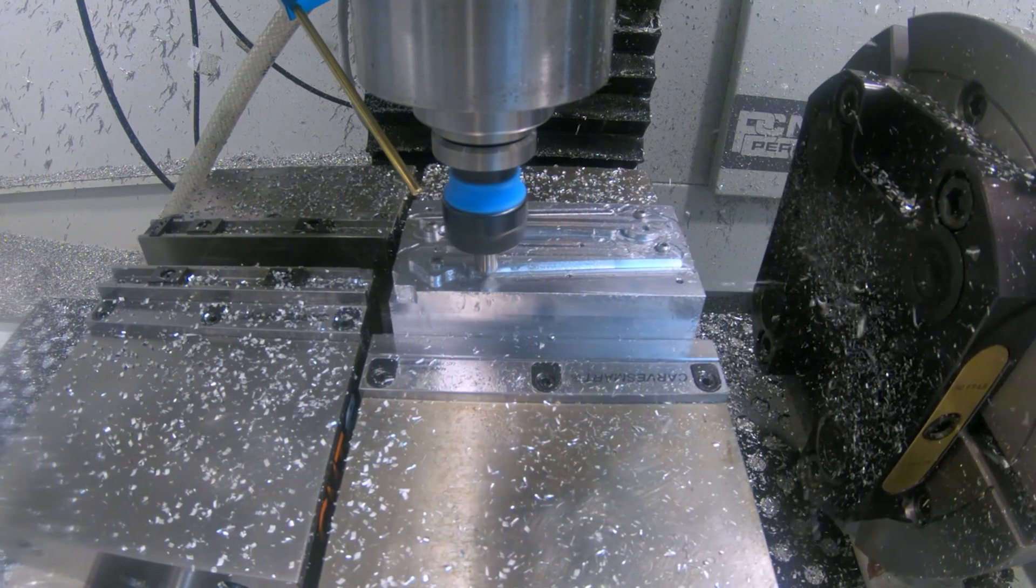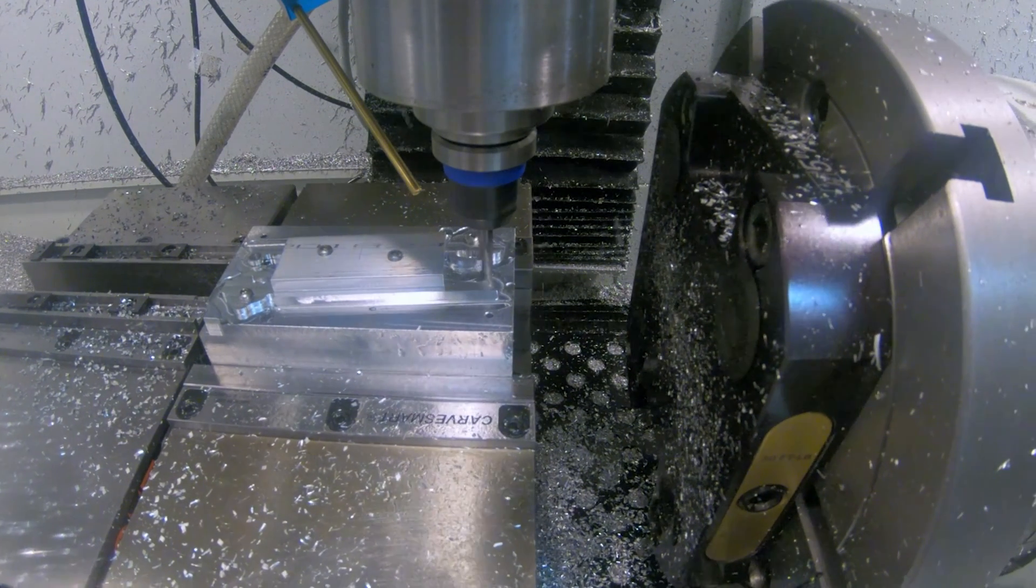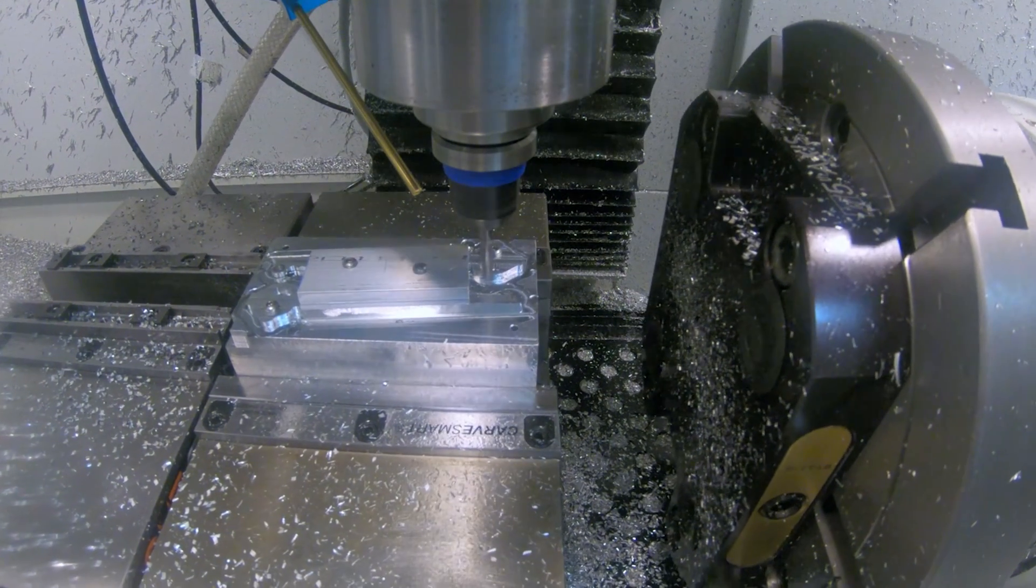After machining the outside of the part I can add a clamp I made and remove the screw in that tab. After which the tab can then be machined away.